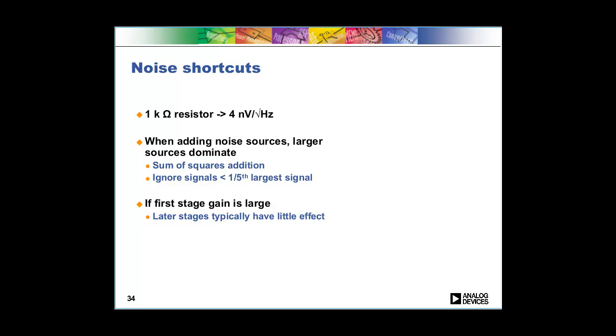The next shortcut is that if your first gain stage is large you can typically ignore the later gain stages. Let's say I've got a gain stage of 10, then my other gain stages are going to be a lot smaller than 10x whatever the noise in the front is probably. So then I can use my second rule where we say okay we can ignore any of the small signals.